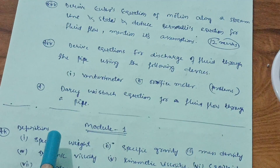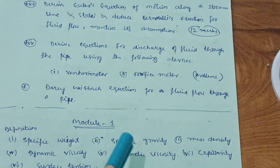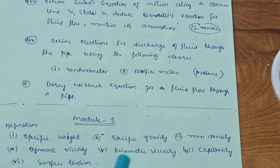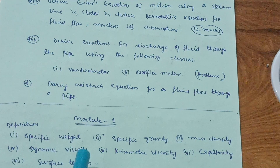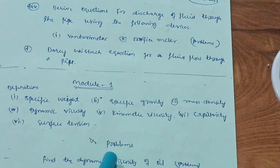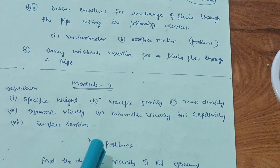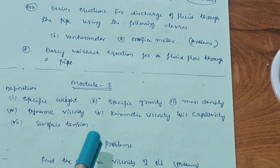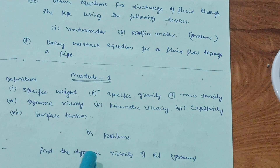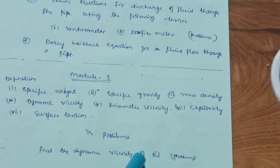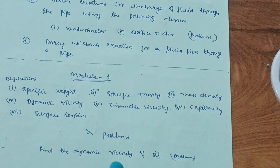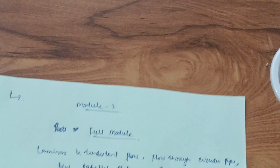In Module 1, cover these eight important definitions: specific weight, specific gravity, mass density, dynamic viscosity, kinematic viscosity, capillarity, and surface tension. The syllabus is large in Module 1, so covering these definitions will get you at least 10 marks. Also try problems like finding the dynamic viscosity of oil — write down the given data and solve accordingly.